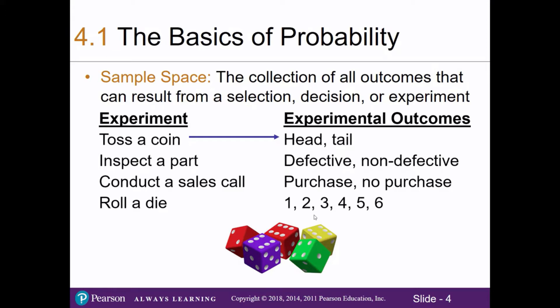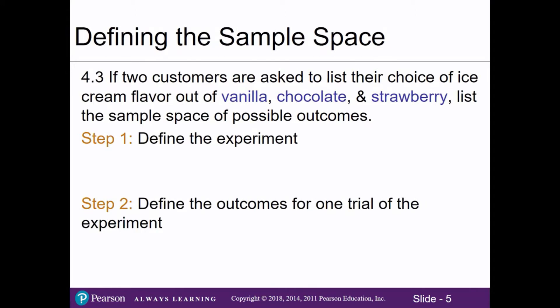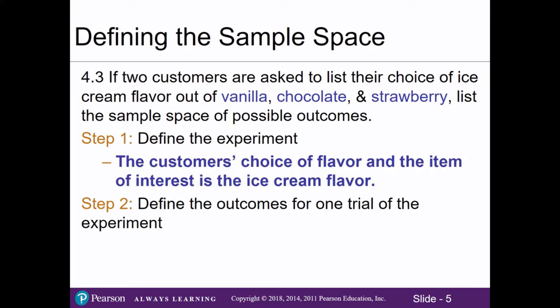In business the sample space is all the potential outcomes of an experiment we might run. For example, problem number three: if two customers are asked to list their choice of ice cream flavor out of vanilla, chocolate, and strawberry, list the sample space of possible outcomes. The experiment here is to find out the customers' choice of flavor, and the item of interest is the ice cream flavor.